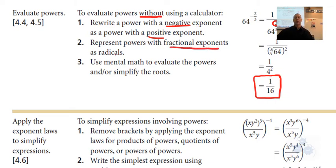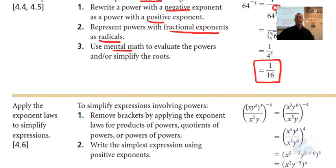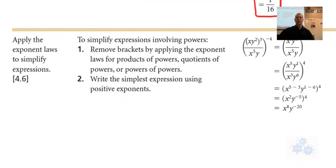So fractional exponents, turn those into radicals and use mental math to evaluate those. So that was 4.4, 4.5. That's what that was all about. The negative exponents, what happens to that? The denominator of a fractional exponent, what is that? And so on.